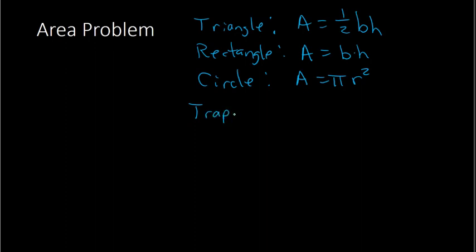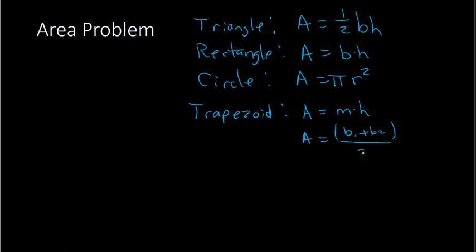You may also see a trapezoid. For a trapezoid, you can find the area by doing the median times the height. The median is base 1 plus base 2 over 2, and you multiply that by the height. These formulas are important to know for area problems.